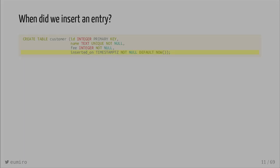So when did we insert the entry with ID 3? What we can do is add another column, 'inserted_on', and then every time we write a new record, it will update automatically with the current time. So with Alice and Bob that were inserted at the beginning of the year, we have Carol that was inserted today. So if we ask what was the state of our database — the number of customers yesterday — we will get two. Today and from now on it will be three persons.